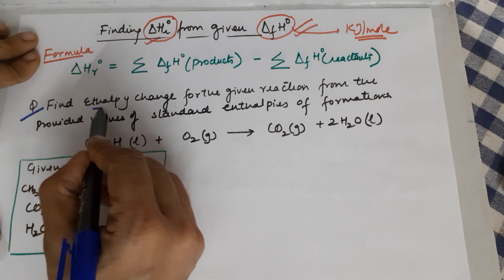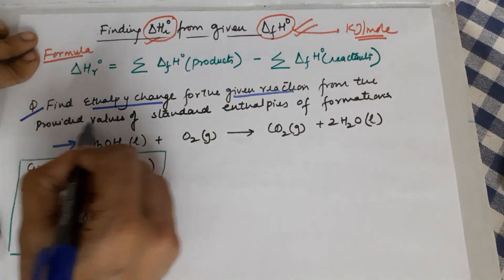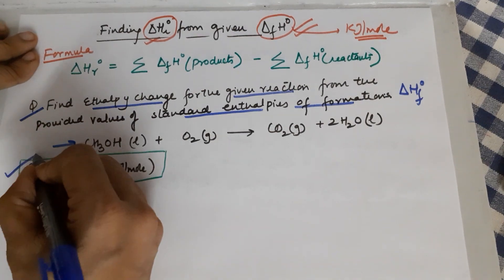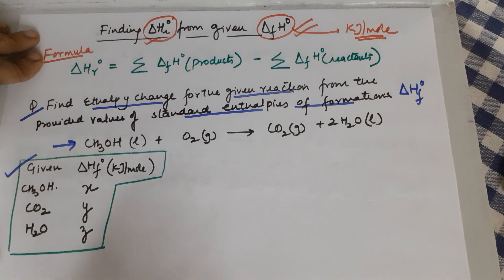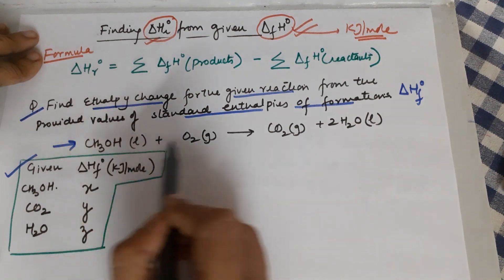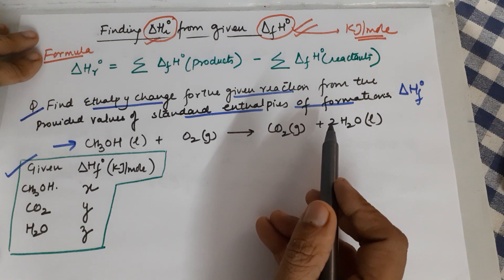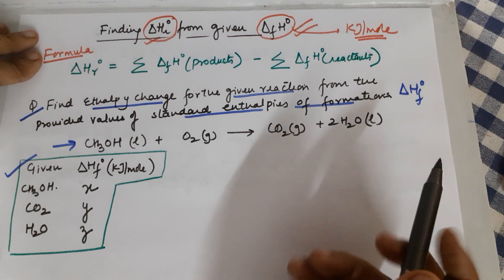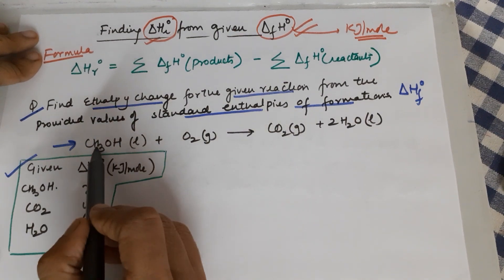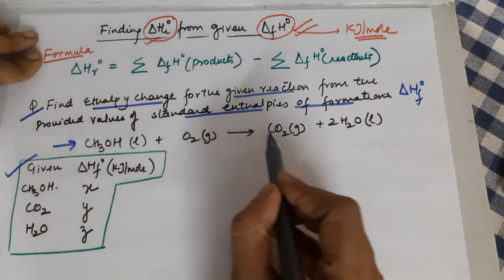To understand this concept, we begin with the first numerical. You have to find the enthalpy change of a given reaction from the provided values of standard enthalpy of formation — the ΔHf° values. I have used X, Y, and Z instead of exact values to illustrate the concept. The first thing you must do is check that the equation is balanced. Carbon is 1 on each side, hydrogens are 4 on each side.